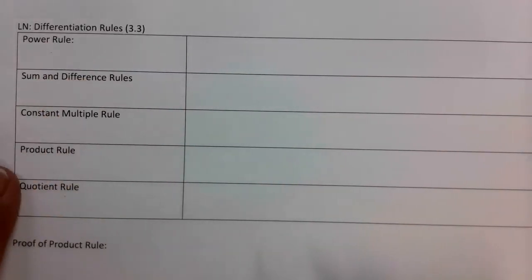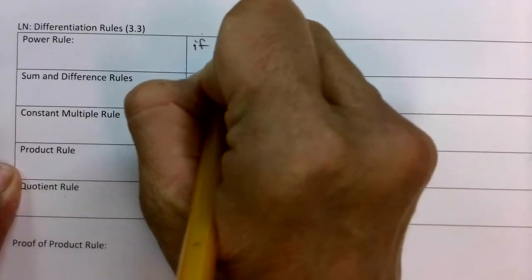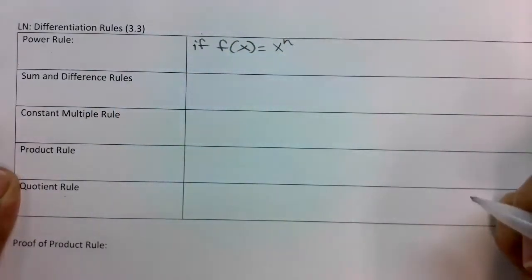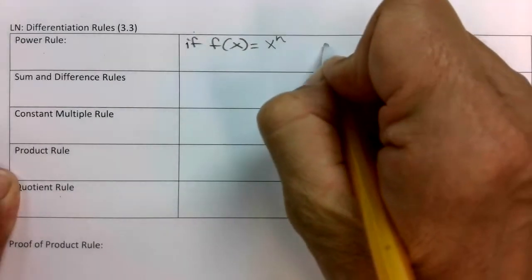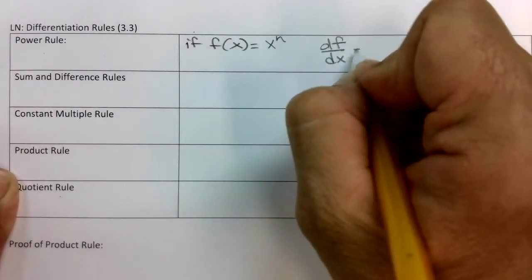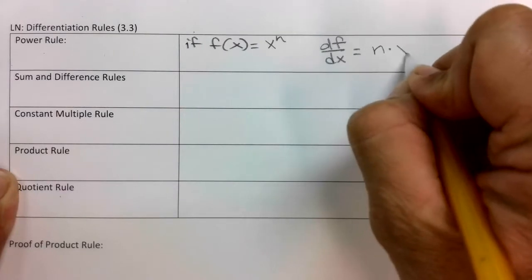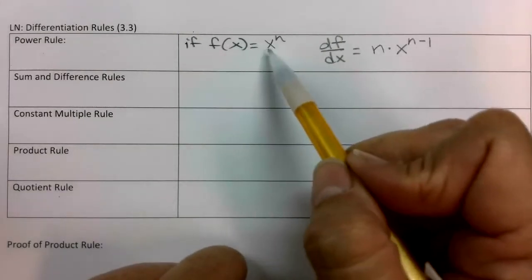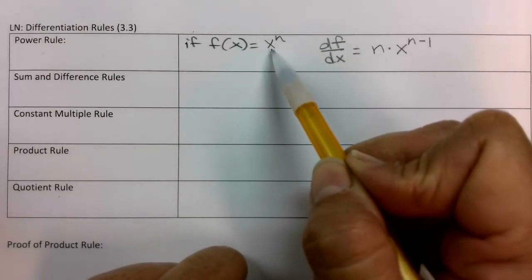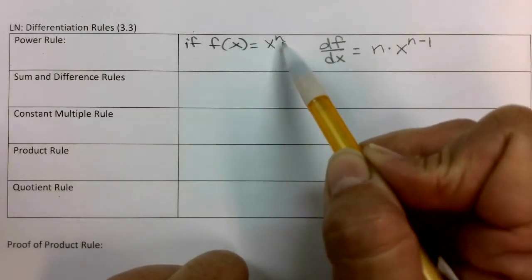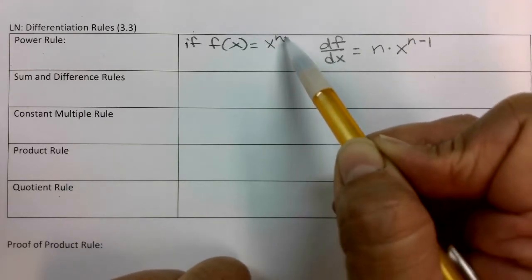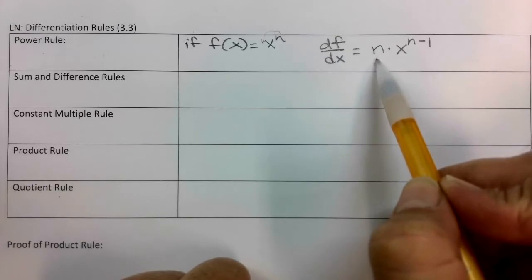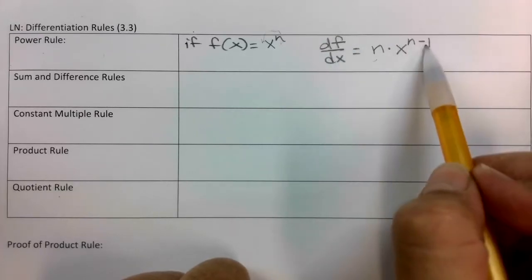So the power rule. If f of x equals x to the n, then df/dx equals n times x to the n minus 1. So if your function is a polynomial monomial, the way we take the derivative is the power comes down in front, becomes the coefficient, and then we decrease the power by 1.